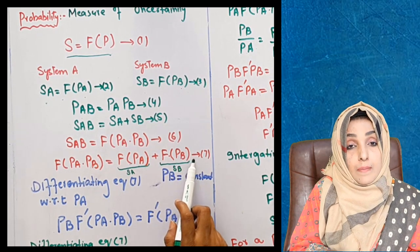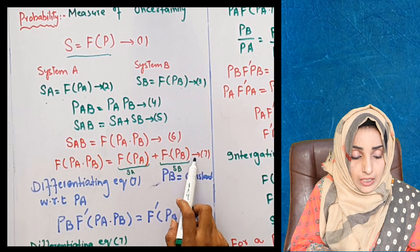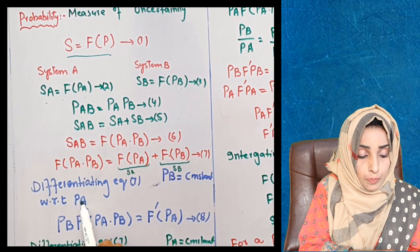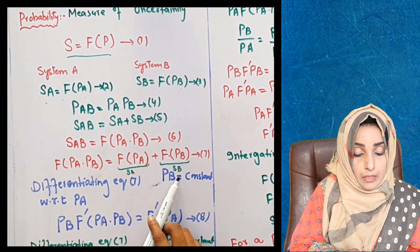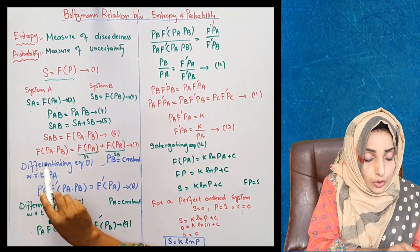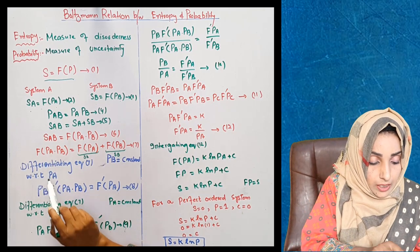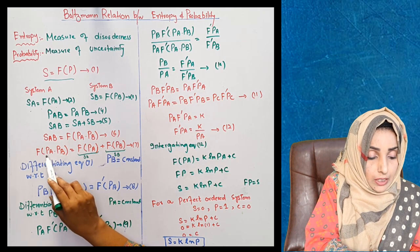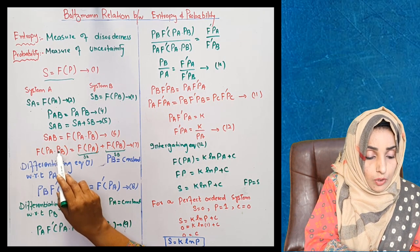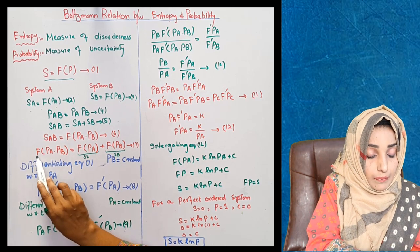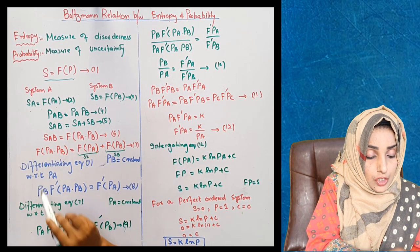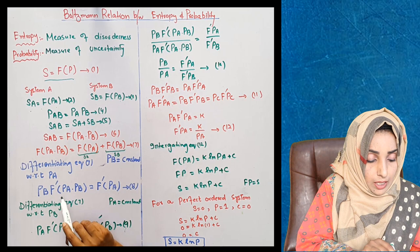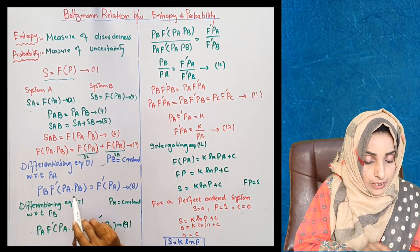This is equation number 7. When we differentiate equation number 7 with respect to P(A), and here P(B) will be constant, this term will come. P(A) will cancel out and P(B) will remain. And F differentiated will give us F prime. This is the complete factor.